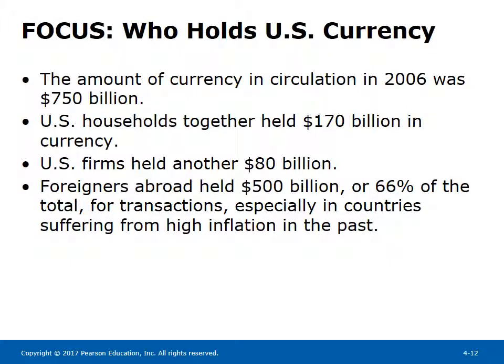Focus: who holds U.S. currency? The amount of currency in circulation in 2006 was $750 billion. U.S. households held $170 billion in currency, U.S. firms held another $80 billion, and foreigners abroad held $500 billion — or 66% of the total — for transactions, especially in countries suffering from high inflation in the past.